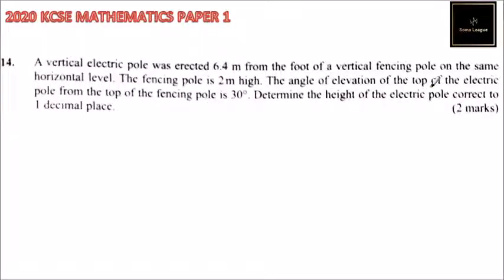The angle of elevation of the top of the electric pole from the top of the fencing pole is 30 degrees. Determine the height of the electric pole correct to one decimal place. To answer this we can make a sketch here.